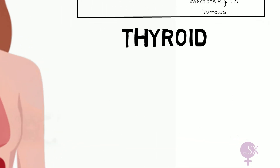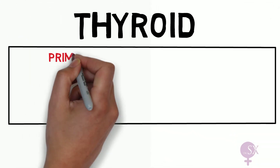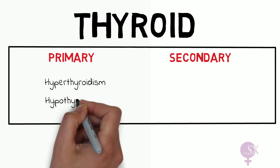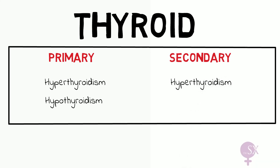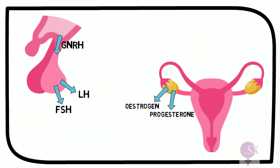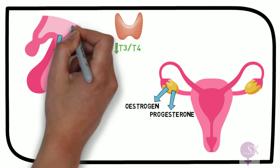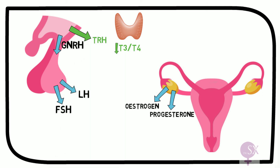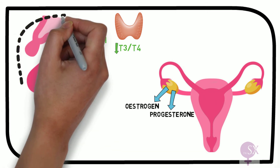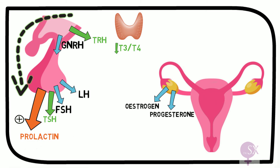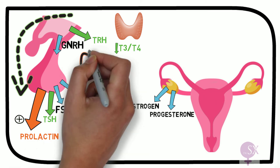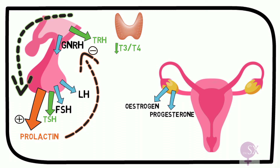Next, we have thyroid disorders resulting in amenorrhea. Both hyperthyroidism and hypothyroidism can cause both primary and secondary amenorrhea. In hypothyroidism, low levels of T3 and T4 stimulate the hypothalamus to secrete thyrotropin-releasing hormone (TRH), which in turn stimulates the anterior pituitary to secrete TSH. TRH also stimulates prolactin release from the pituitary, and prolactin inhibits GnRH release, which leads to decreased FSH levels and therefore reduced oestrogen, causing amenorrhea.